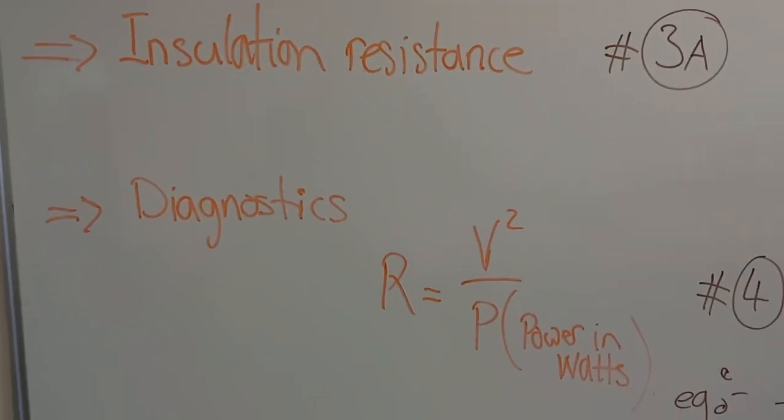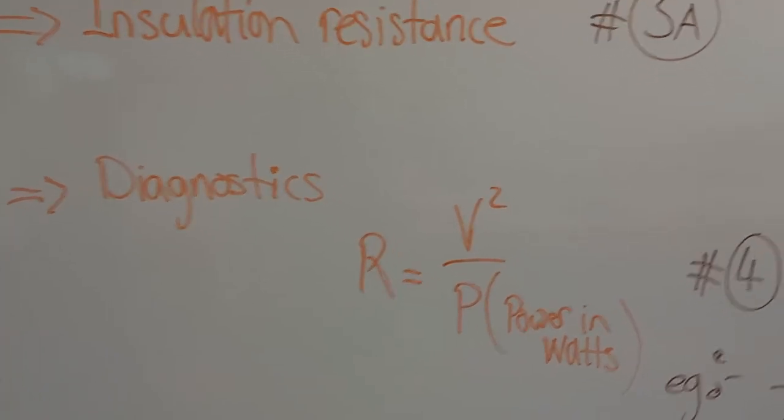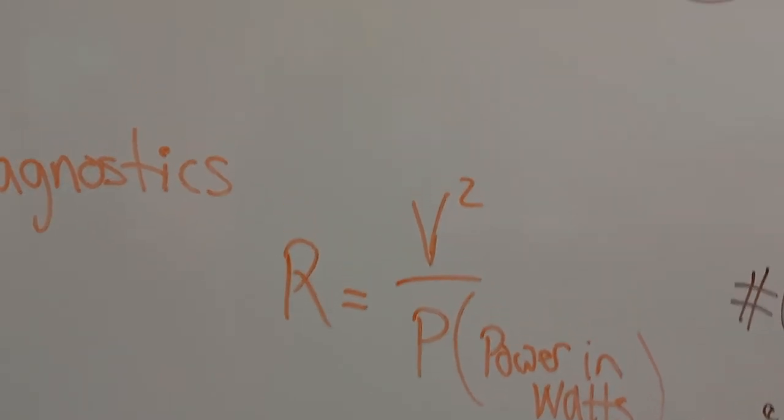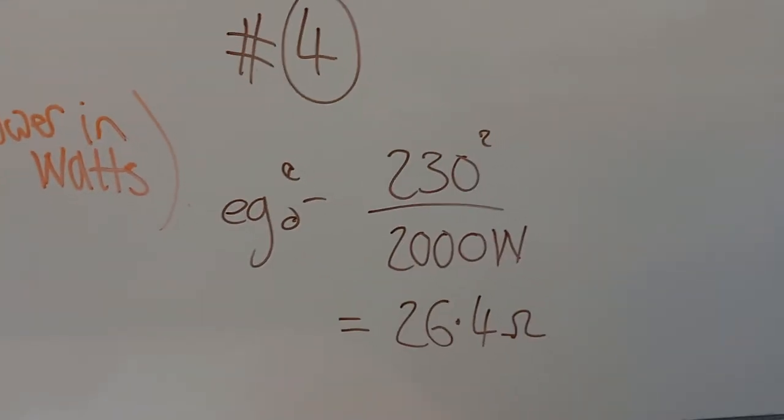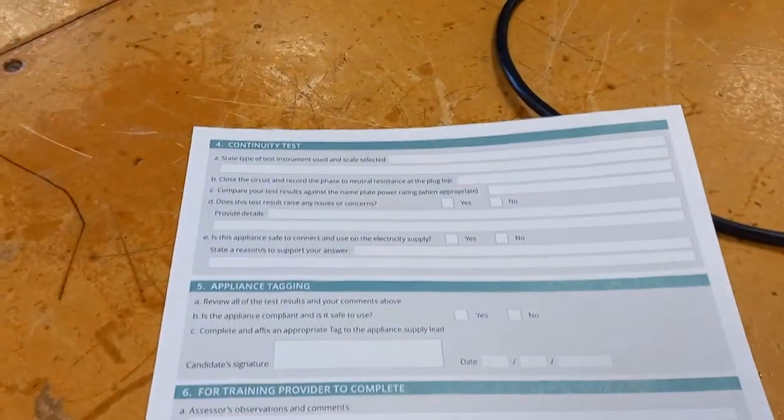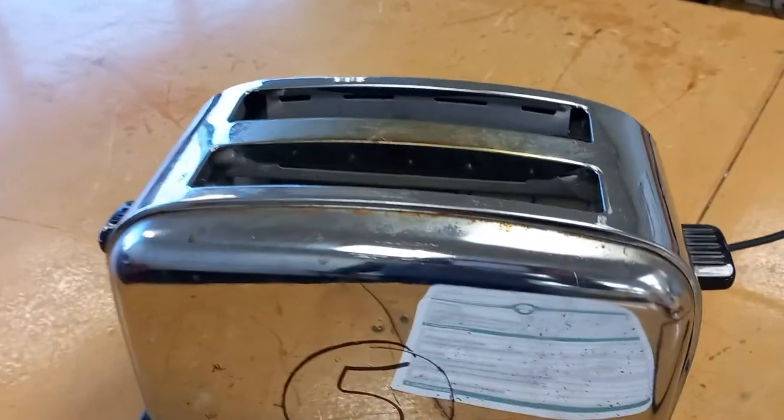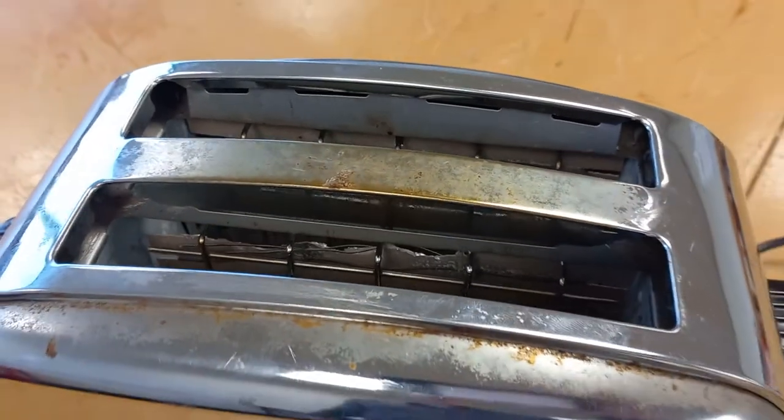The next test is more about diagnostics than safety. Here's the formula for calculating the resistance of the appliance using voltage squared over the power in watts. This is about checking if the appliance measures up and that the elements of this particular toaster match the calculated value on the nameplate. That gives us an idea in diagnostics if we have an open-circuited or short-circuited element.